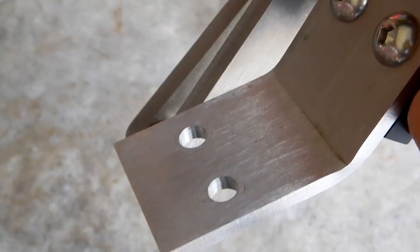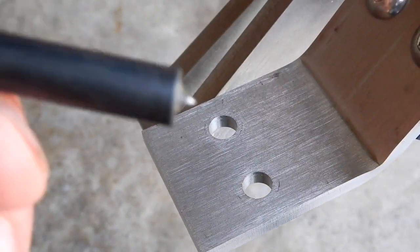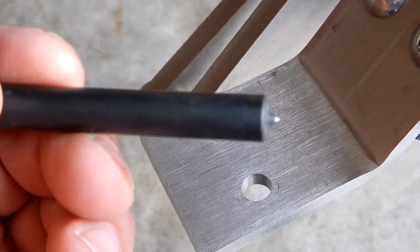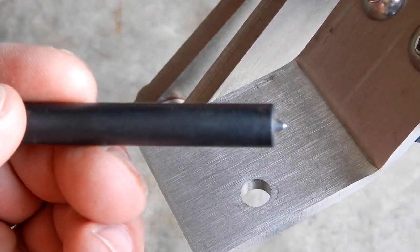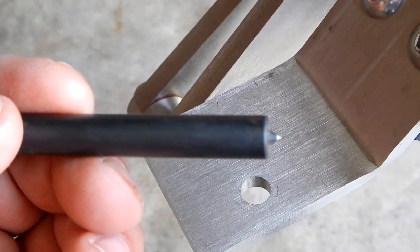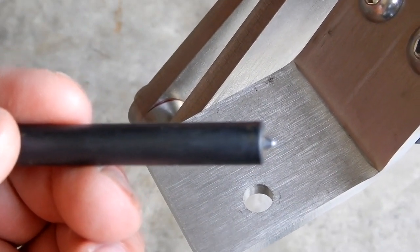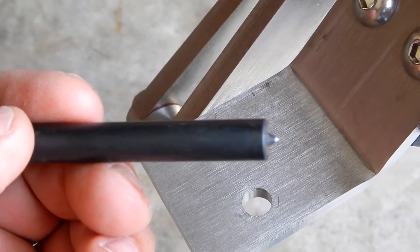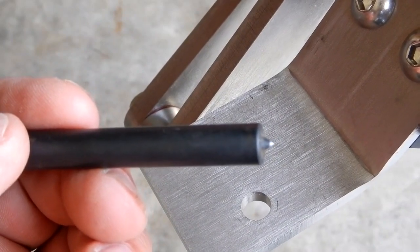So this is how simple it is. This is a transfer punch and it's not to be used like a center punch. You just lightly tap it and then you can use a center punch to make the mark you made a little deeper.